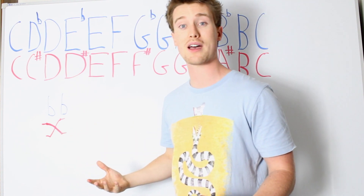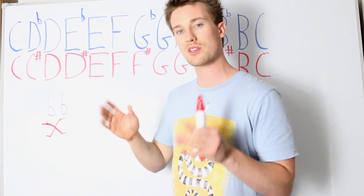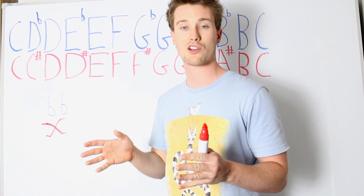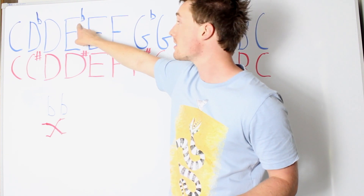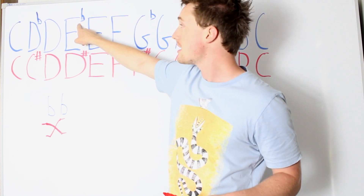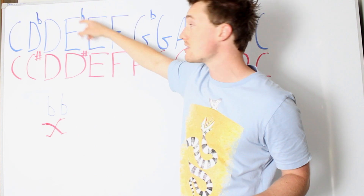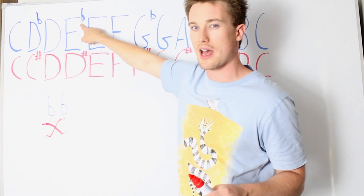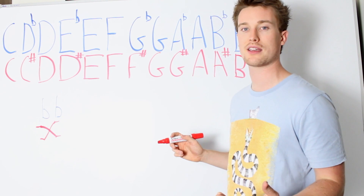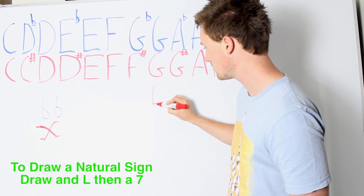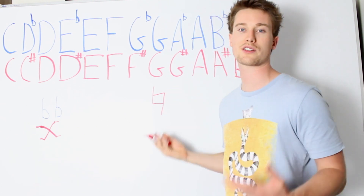Another symbol you'll find in sheet music is the natural sign. A natural sign means that within a particular song — say a song that's in E flat with lots of E flat notes — if the song changes and you want to play a normal E instead, you'll see a natural sign on the E rather than a flat. To draw a natural sign, you simply draw an L and then add a 7 to it.